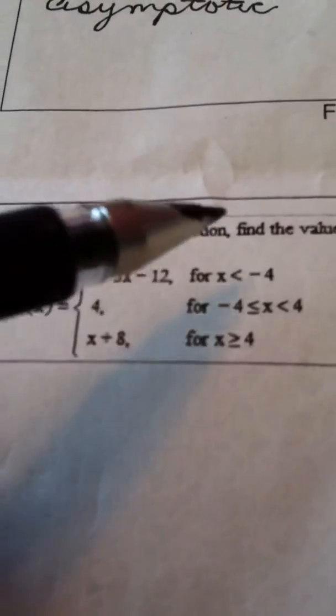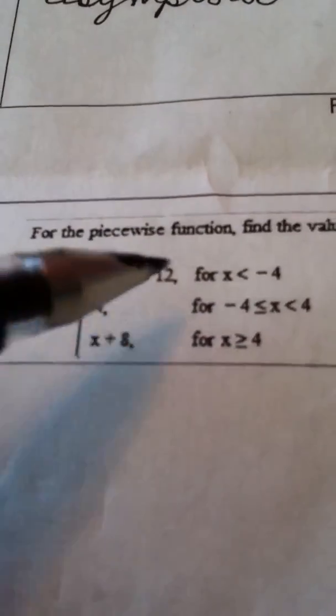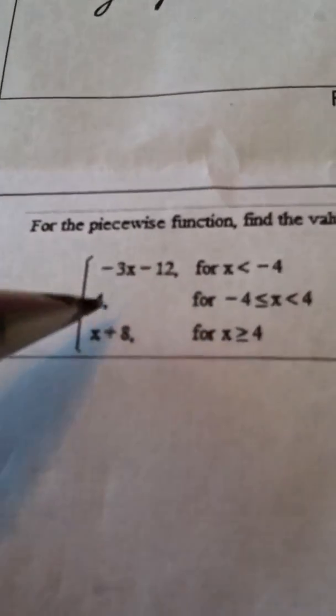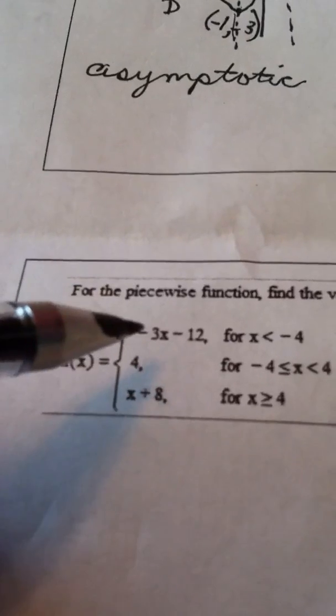A piecewise function is basically a function that's defined in parts. So this function actually has three different definitions.